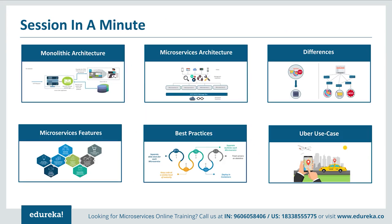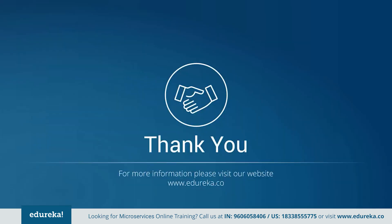Let me give you a quick summary of what we discussed. We started with understanding what monolithic architecture was and its challenges. Then we went through the microservice architecture and understood the differences between both architectures. After understanding the architectures, we focused on the features of microservices and discussed the best practices to design them. Then we compared Uber's previous framework to the present one and understood what made them change their architecture. Thank you for watching this video and have a great day.